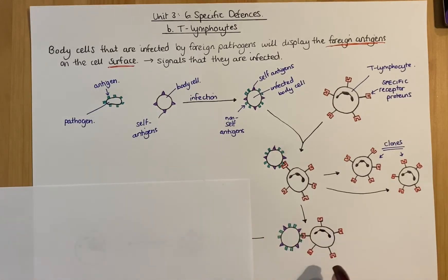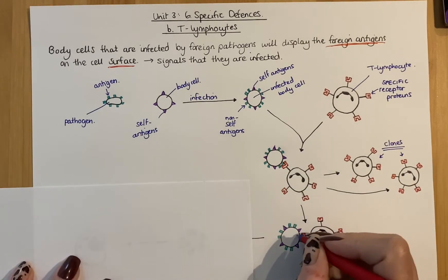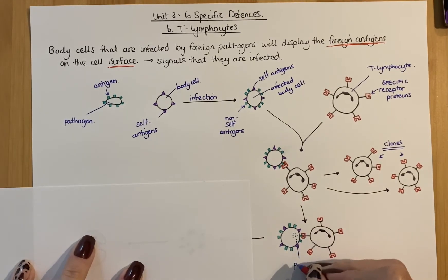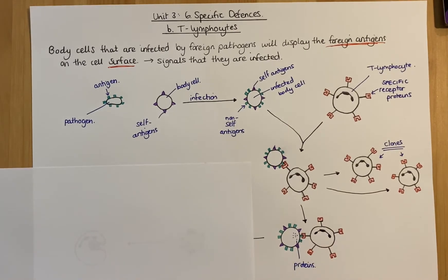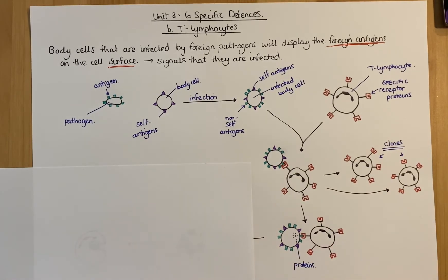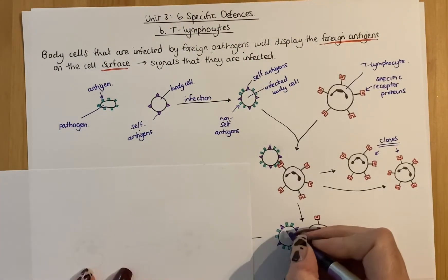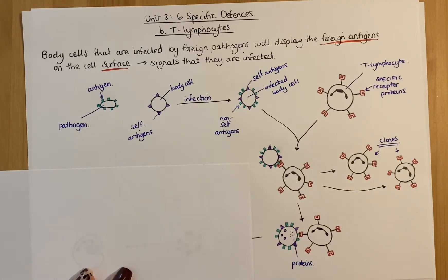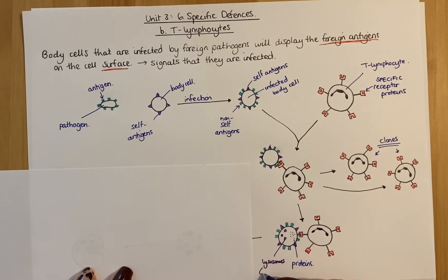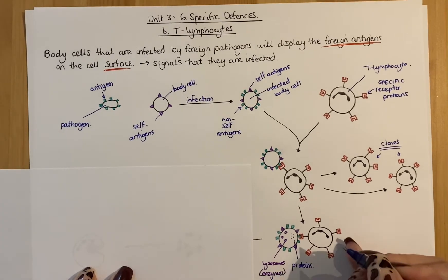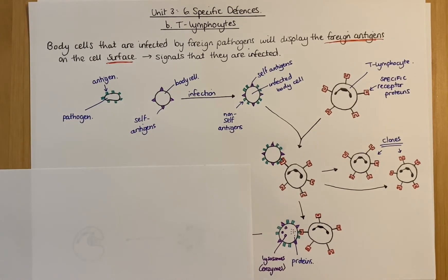Once the T lymphocyte is attached to that infected body cell, it will then release proteins into the cell. Those proteins diffuse into the infected body cell and cause the release of self-destructive enzymes. These self-destructive enzymes are kept in lysosomes within the cell. The proteins tell those lysosomes to release the self-destructive enzymes, which will destroy the cell itself.